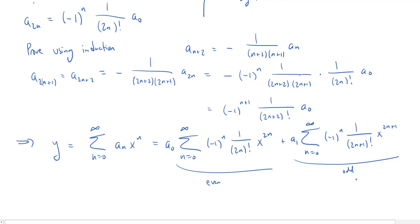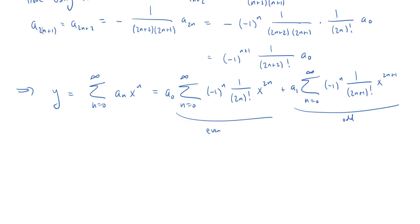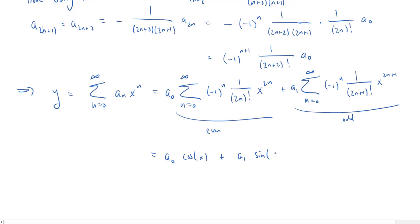We could stop here, but it would be a missed opportunity not to recognize these series. The even series is the Maclaurin series for cos(x), and the odd series is the Maclaurin series for sin(x). So our solution is y = a_0 cos(x) + a_1 sin(x) — a satisfying result, though any other technique from our toolbox would have found this much faster.